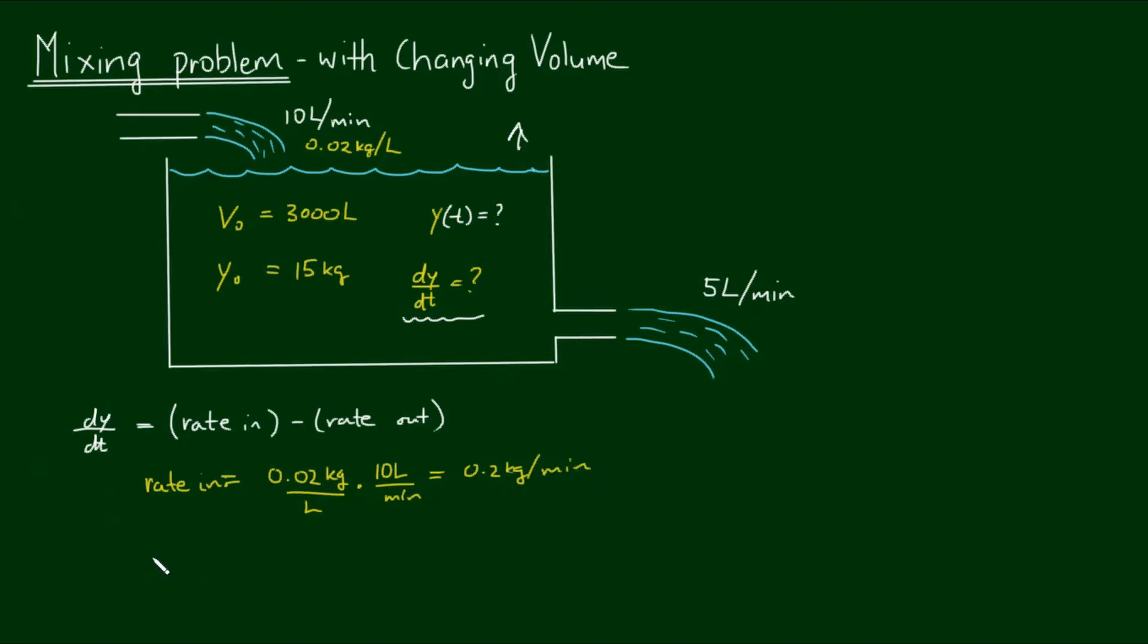Now for the rate out, that's a little bit more tricky because we do not have a steady volume anymore. However, one of the assumptions of this problem is that the salt fully mixes with the solution before it leaves the tank. So that means the quantity of salt is fully dissolved into the volume of solution in the tank. And we can write that as a function of the volume. So we have an unknown y, which is the quantity of salt, over the volume of the tank at any given time. So that's the fully mixed solution. And it's flowing out at a rate of 5 litres per minute.